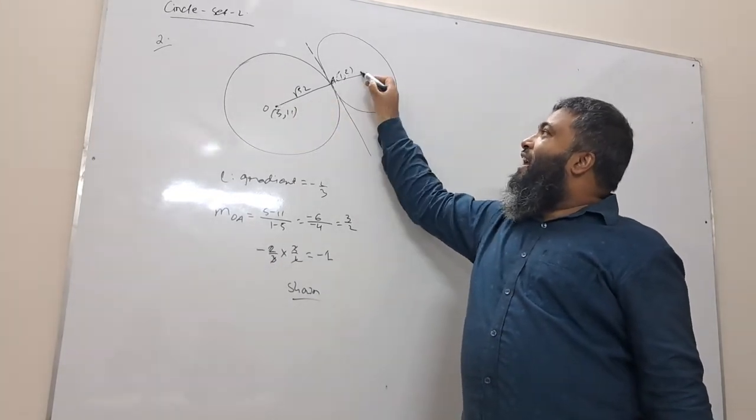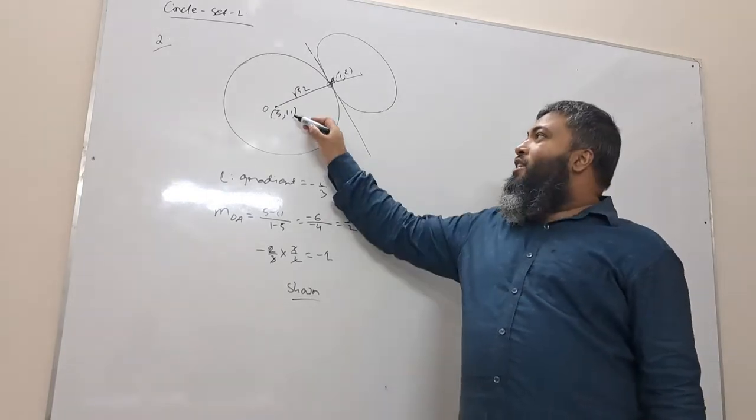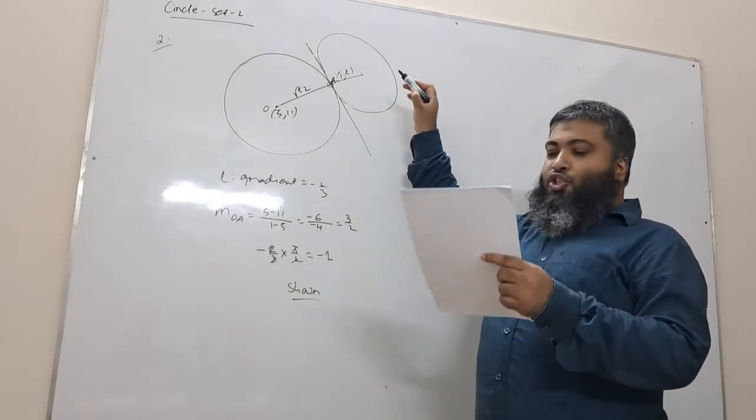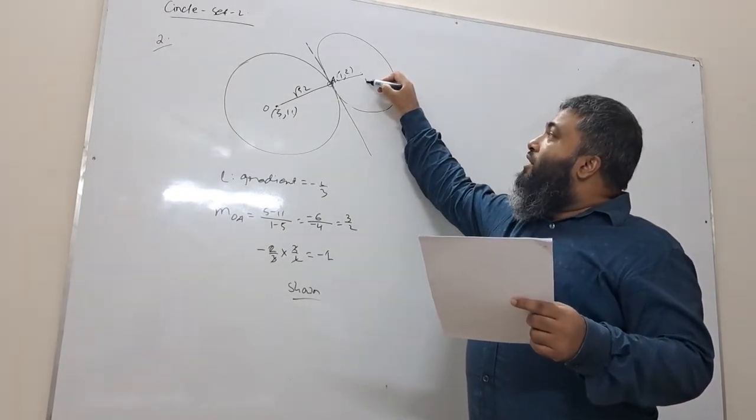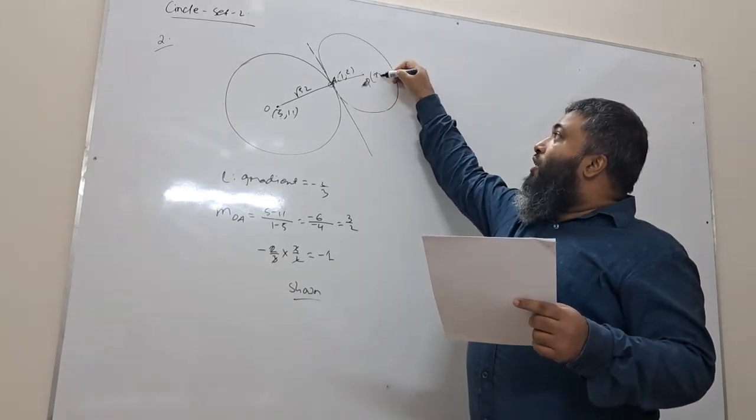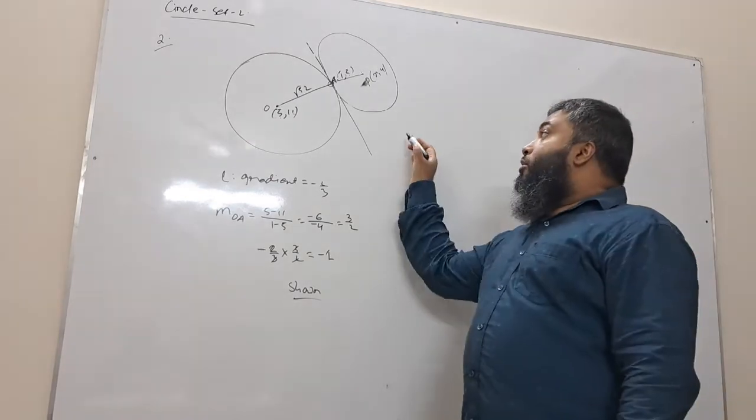Then A line is midpoint. So, the other coordinate 5 is 11. A coordinate is 1, 5. And the other coordinate is X.